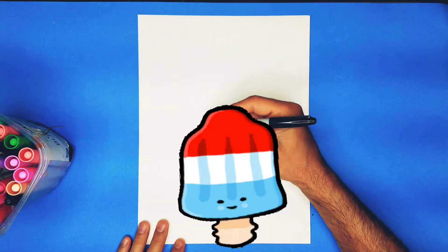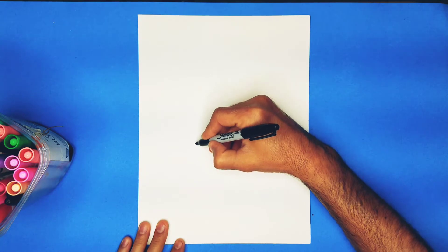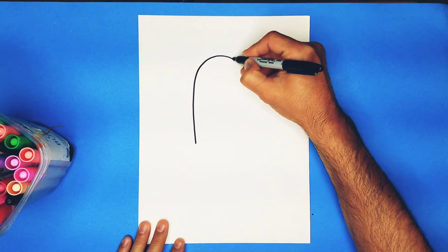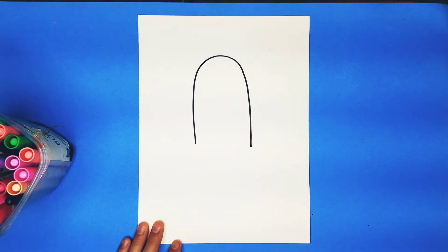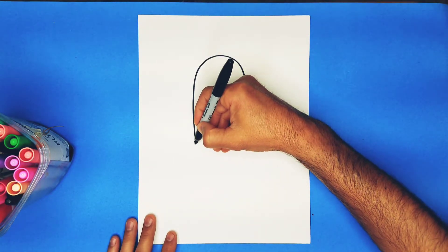Let's go. Going to start by making a long oval type shape like that. It's like an upside down U. We're going to curve it at the bottom a little bit.